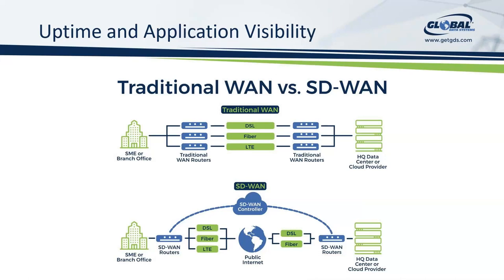We're now able to use multiple technologies to connect the network. You can still use MPLS, but you also have broadband connections, which are much more affordable and ubiquitous — you can pretty much get them anywhere. And of course you also have wireless technology. Looking at 4G and certainly going into 5G, wireless could now be your last-mile solution. You may want to introduce additional connectivity types and still have all of them managed under one umbrella.